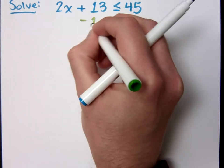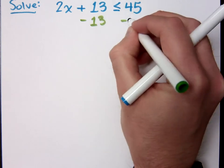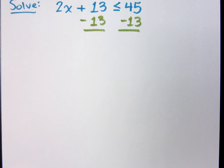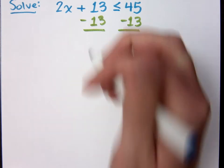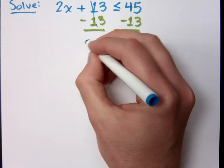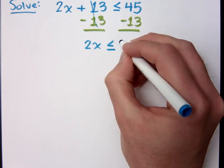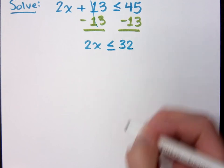Subtract 13. Subtract 13 on both sides, right? Now, does that change the direction of my inequality? No. I'm not multiplying or dividing. So I have 2x is still less than or equal to what? 32.